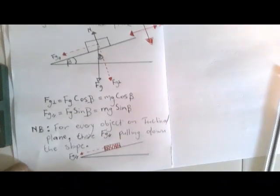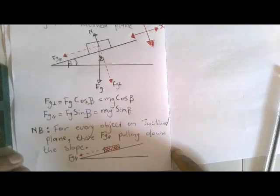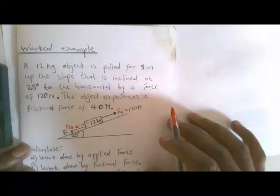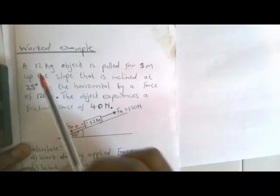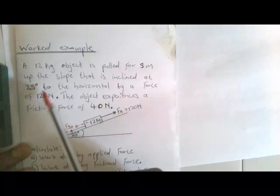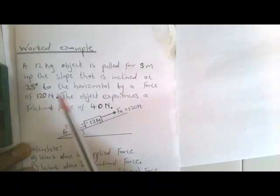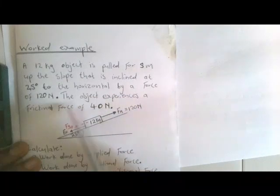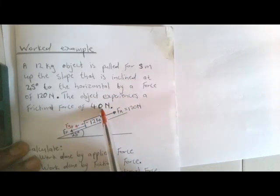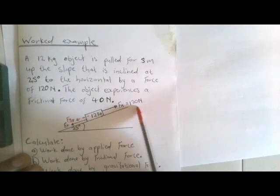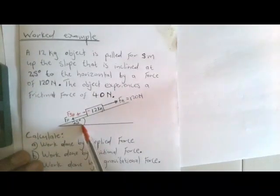Here is a worked example: A 12 kg object is pulled for 5 meters up a slope inclined at 25 degrees to the horizontal by a force of 120 newtons. The object experiences a frictional force of 40 newtons. On the diagram, the 12 kg object is pulled up the slope with a force of 120 newtons, and the angle of the slope is 25 degrees.